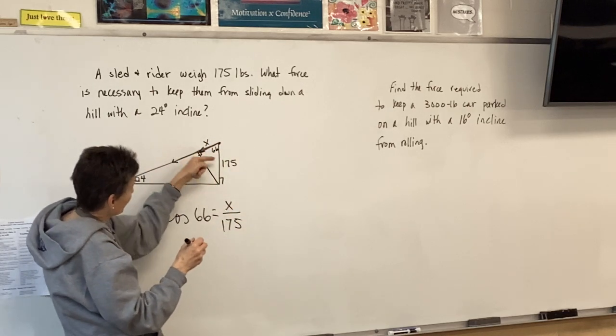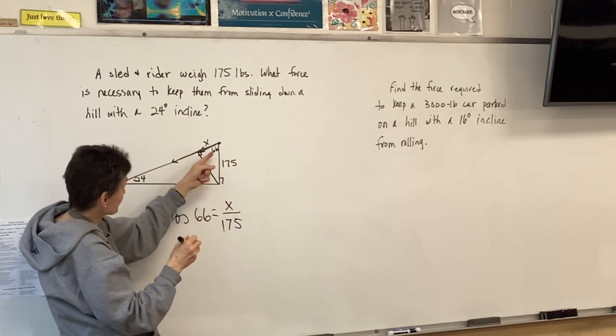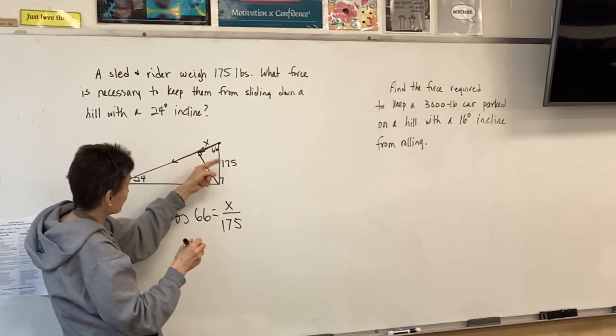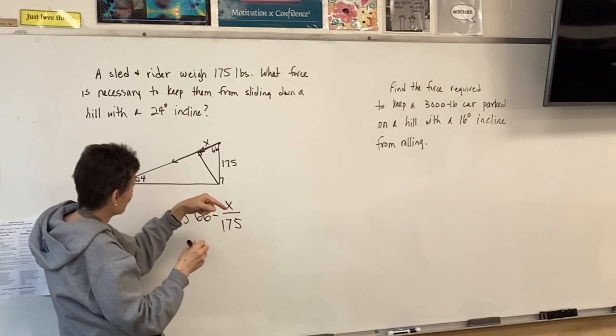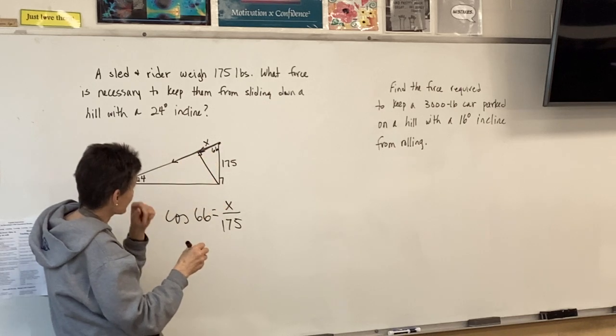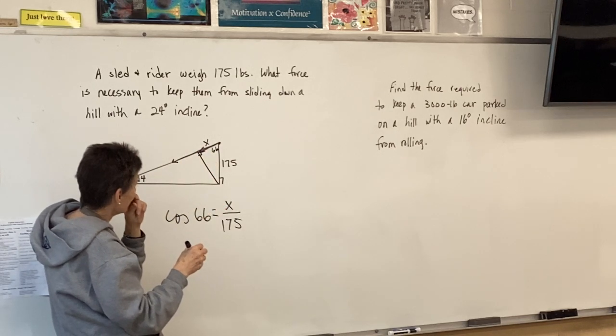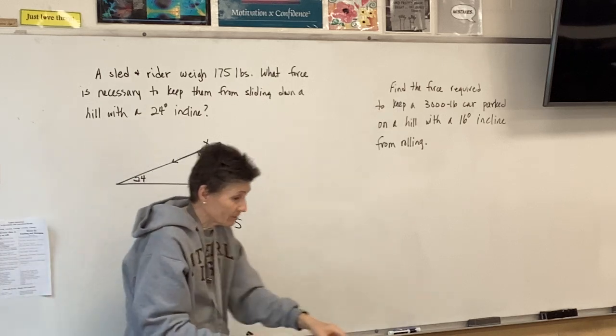And say cosine 66 equals x over 175, because in this right triangle, the little one, 175 is the hypotenuse, and for 66 this is the adjacent side right here. So on my calculator, type it in.